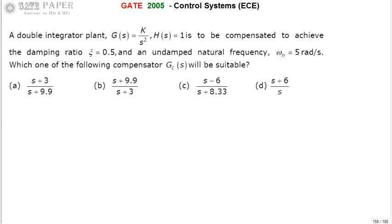We are discussing the GATE 2005 ECE paper. A double integrator plant G(s) = K/s² with H(s) = 1 is to be compensated to achieve a damping ratio of 0.5 and undamped natural frequency of 5 radians per second. Which one of the following compensators will be suitable to achieve ζ = 0.5 and ωn = 5 rad/s for the given double integrator plant?